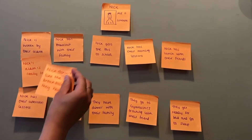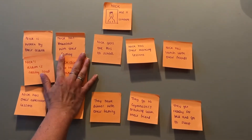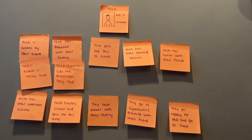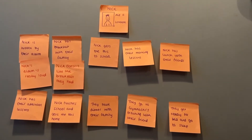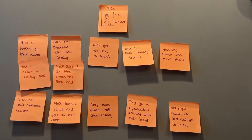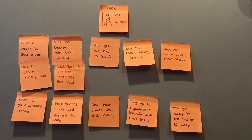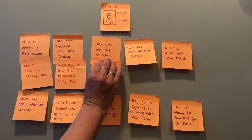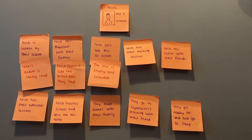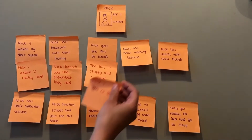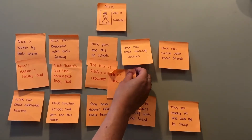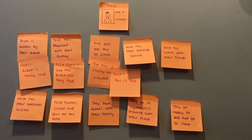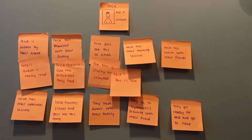Maybe Nick doesn't like the breakfast he had — maybe it's the same boring cereal they always have. That's definitely a problem. Write this one down on another post-it note and add it below the activity. Maybe the bus that Nick takes to school is always crowded and stuffy — definitely a problem. And maybe the bus is always late too. You can create multiple problem statements for one action.